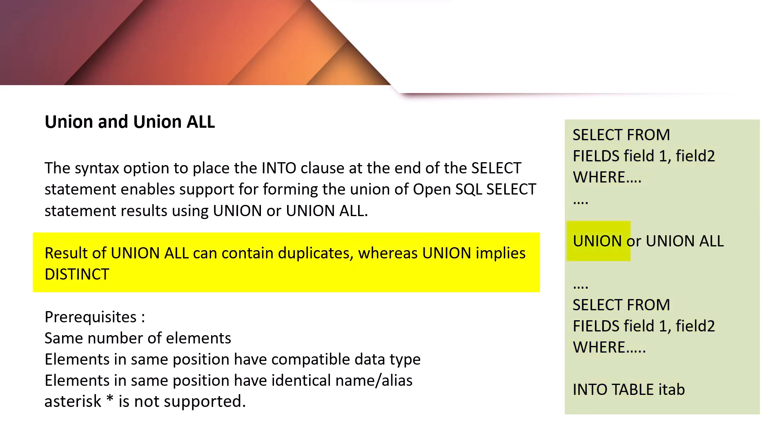When you use UNION, the combined result contains no duplicate rows. Whereas when you use UNION ALL, the results are combined and duplicate values are not removed.